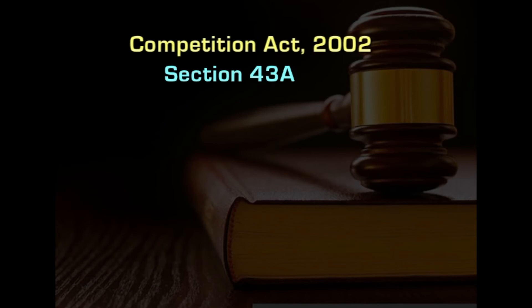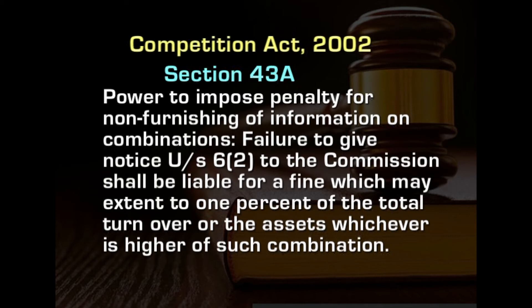Moving on to section 43, which talks about the power to impose penalty for non-furnishing of information on combinations. Failure to give a notice under subsection 2 of section 6 to the commission shall be liable for a fine which may extend to 1 percent of the total turnover or assets, whichever is higher, of such combination. This relates directly to disobedience of section 6, which talks about regulation of combinations, and section 43 directly lays down a sanction for failure to comply with section 6 subsection 2.